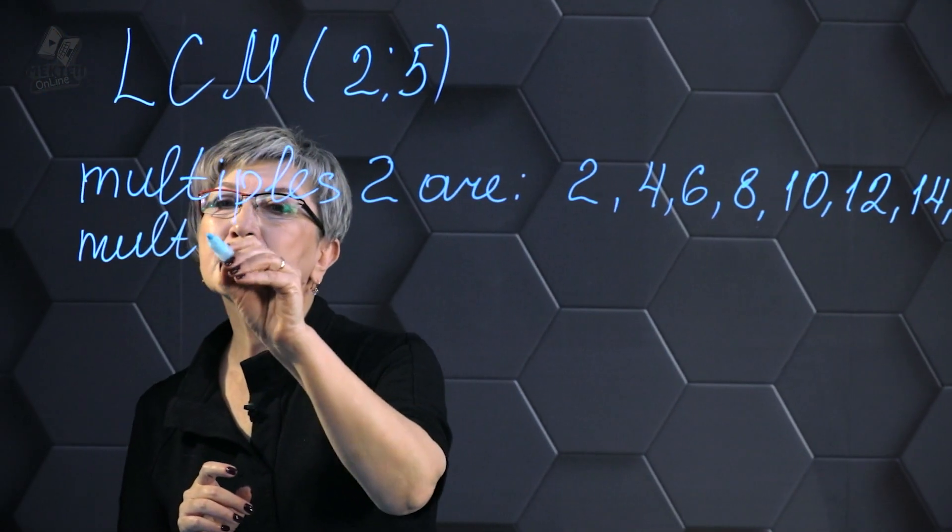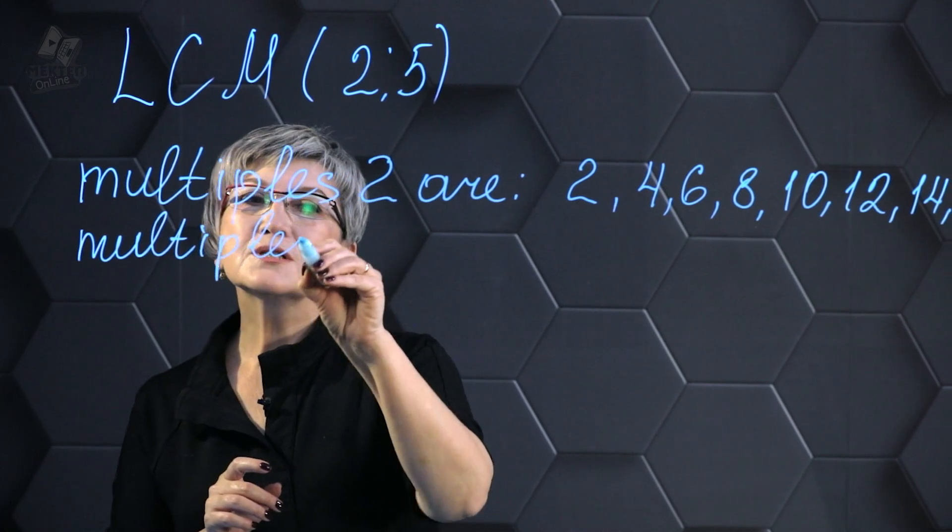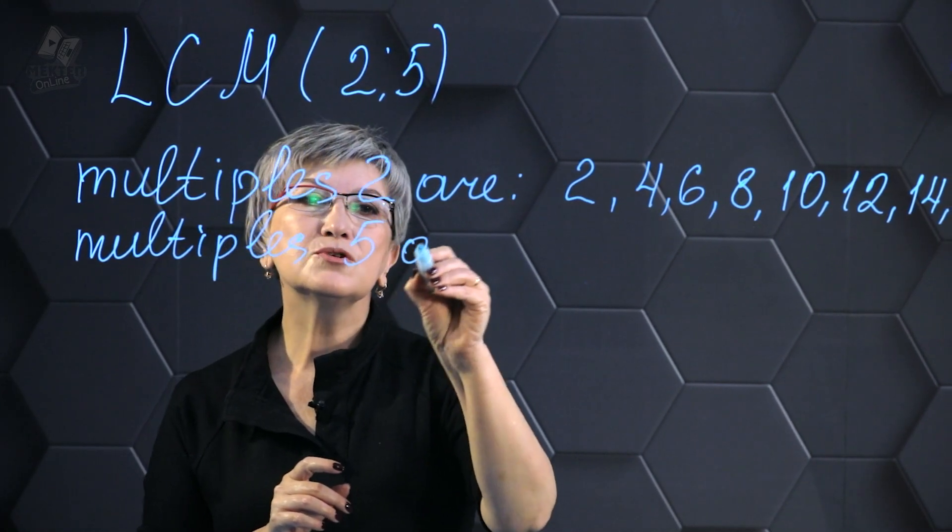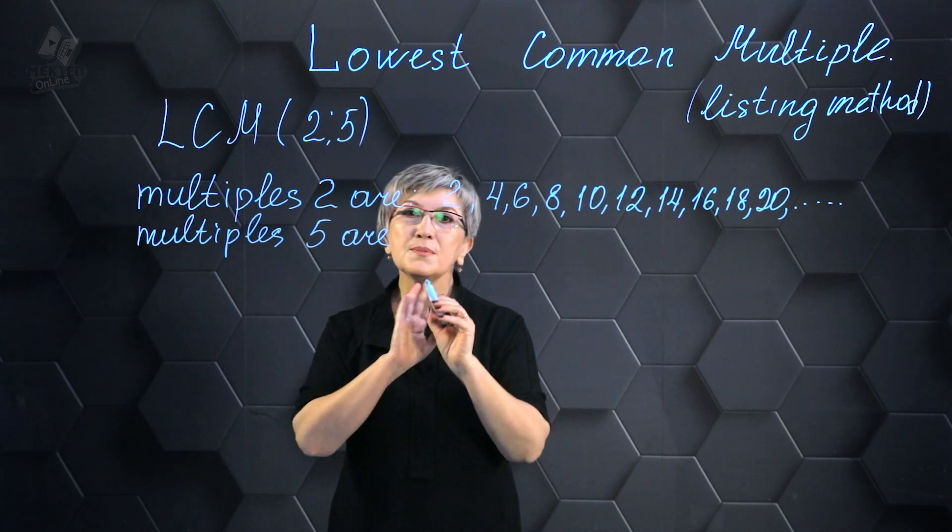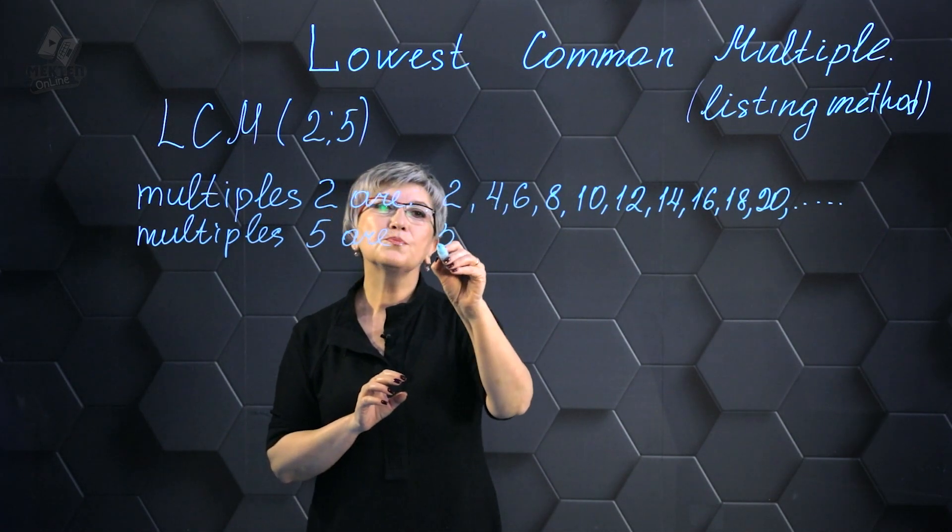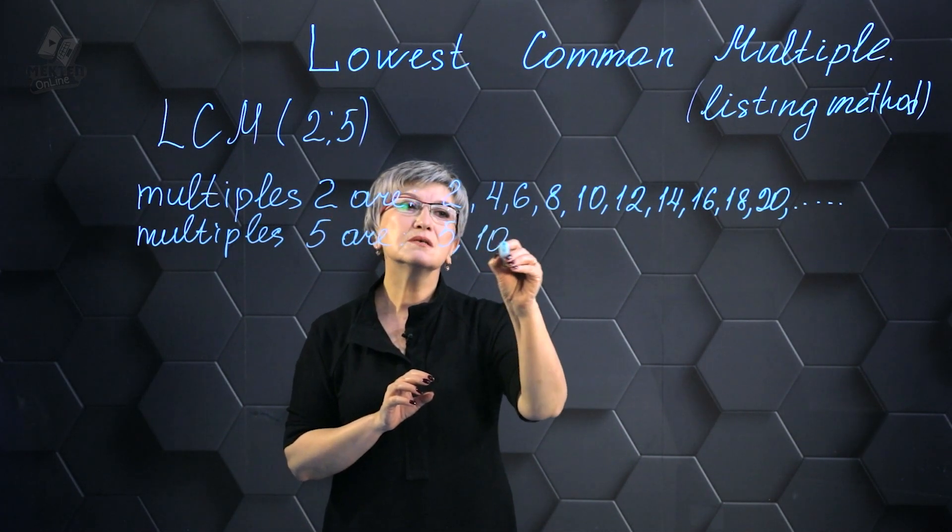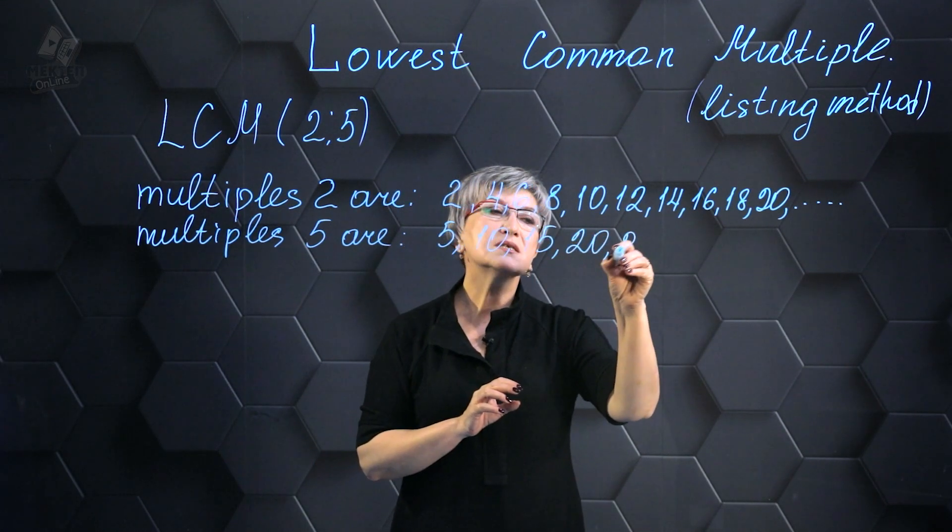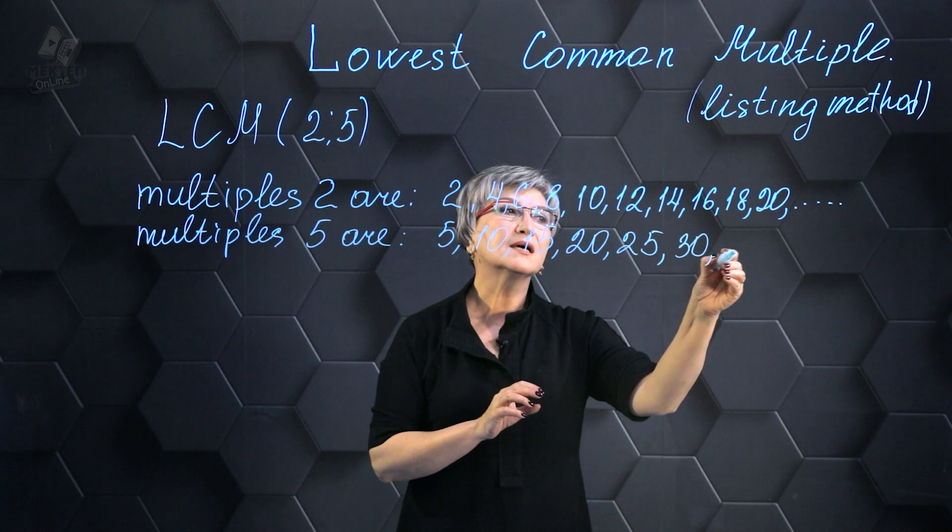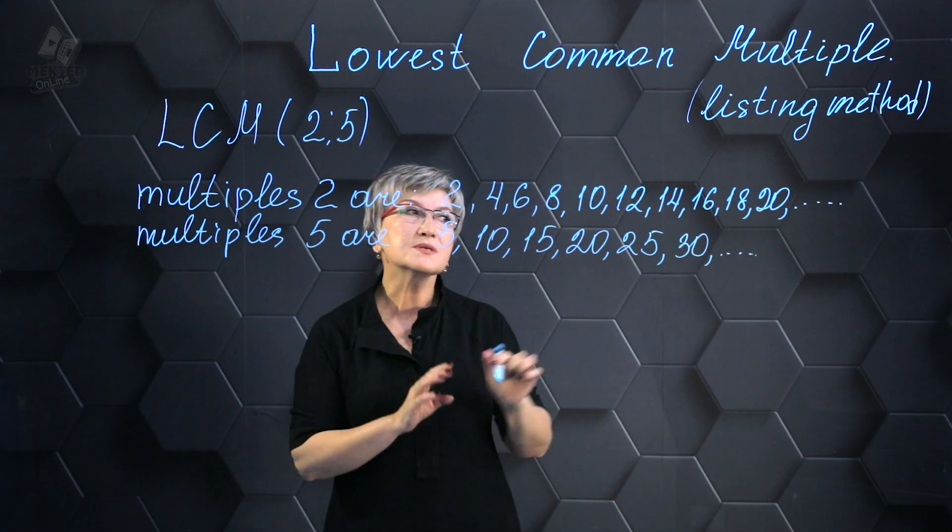Following that, I will write down the multiples of 5 in sequential order. These are the numbers divisible by 5 without a remainder: 5, 10, 15, 20, 25, 30, and so on.